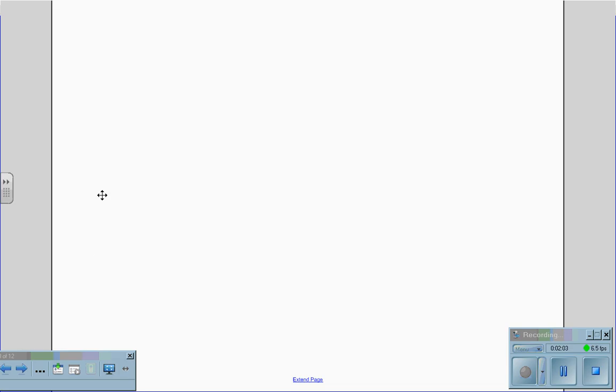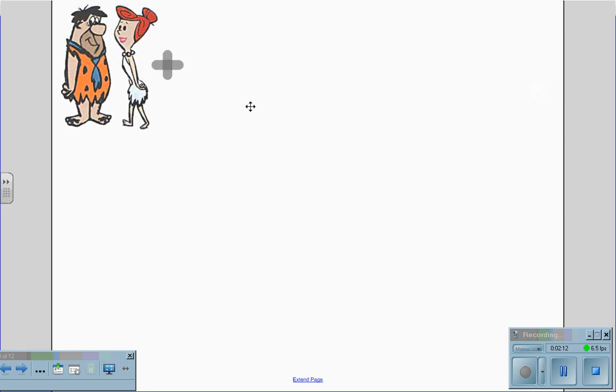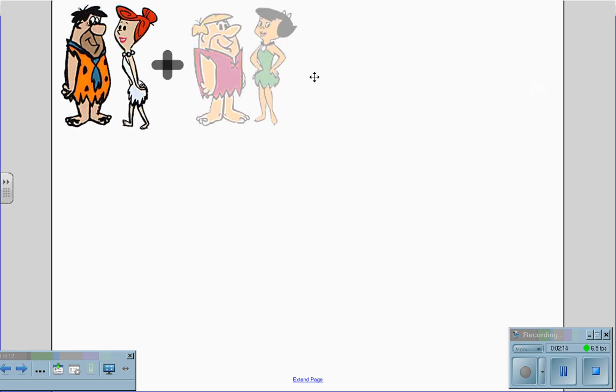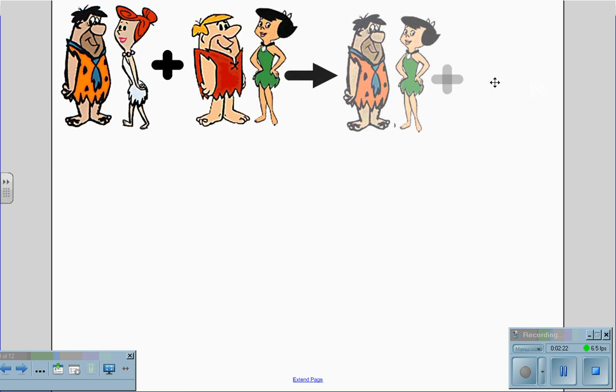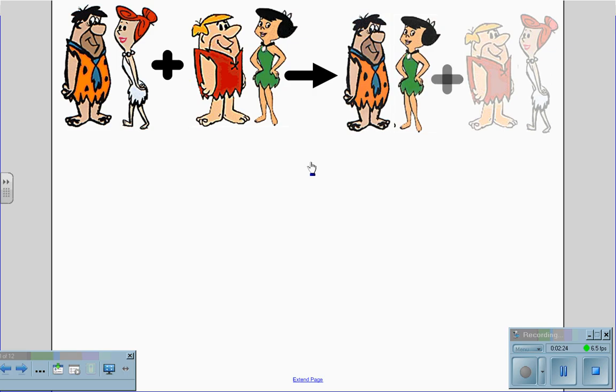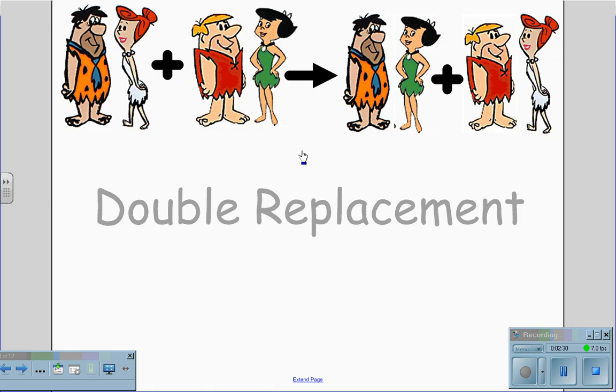And our last type of chemical reaction is a double replacement. That's if the Flintstones went to that same dance and there they met the Rubbles. And while they were dancing, Fred ended up with Betty while Barney ended up with Wilma. In this case, we are exchanging two partners, this being double replacement.